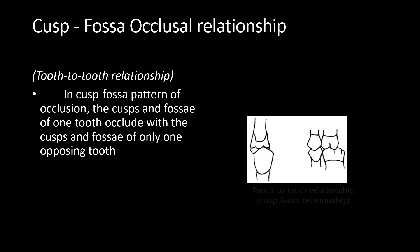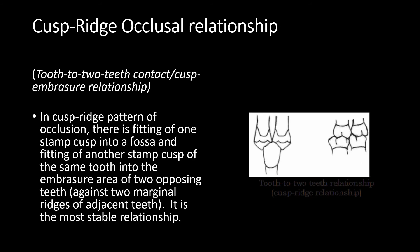In a cusp-fossa relationship, the cusp of one tooth occludes with the fossa of a single opposing tooth. In a cusp-ridge occlusal relationship — also called tooth-to-two-teeth contact or cusp-embrasure relationship — the stamp cusp of one tooth occludes with the fossa of the opposing tooth, while another stamp cusp occludes with the embrasure formed by the marginal ridges of two adjacent teeth.